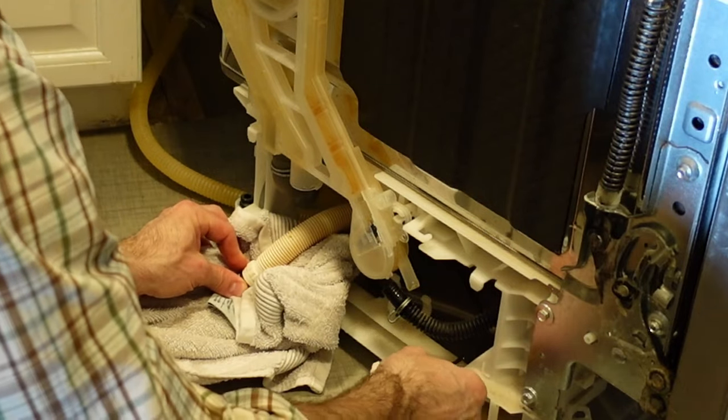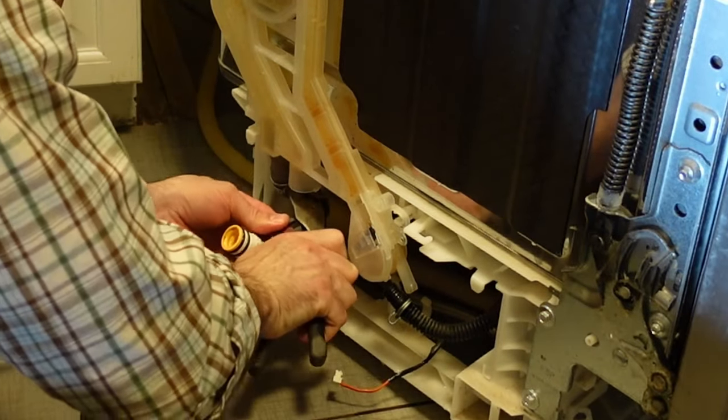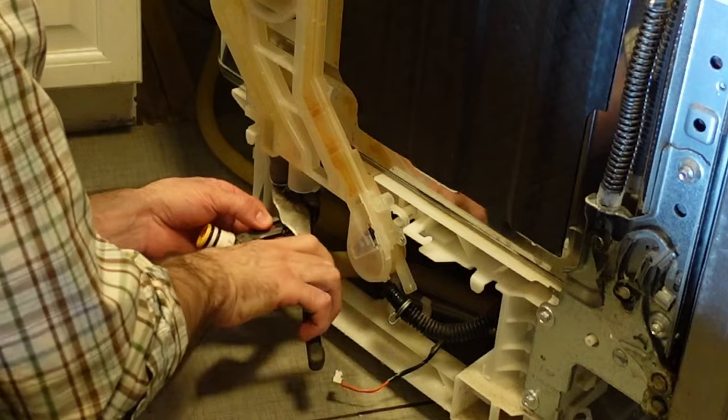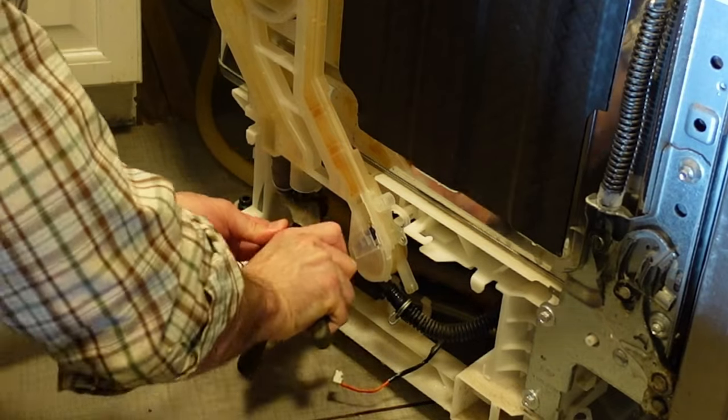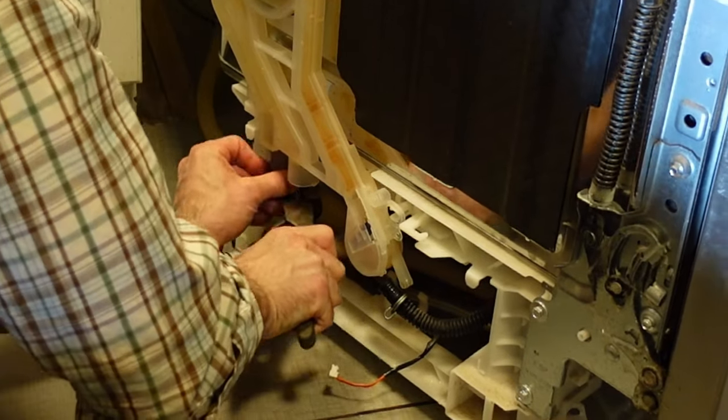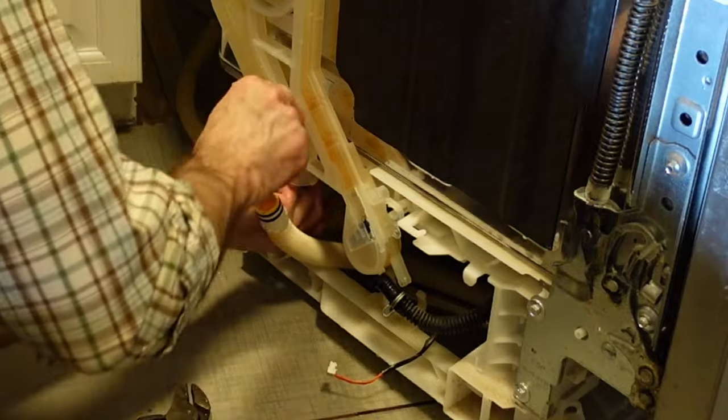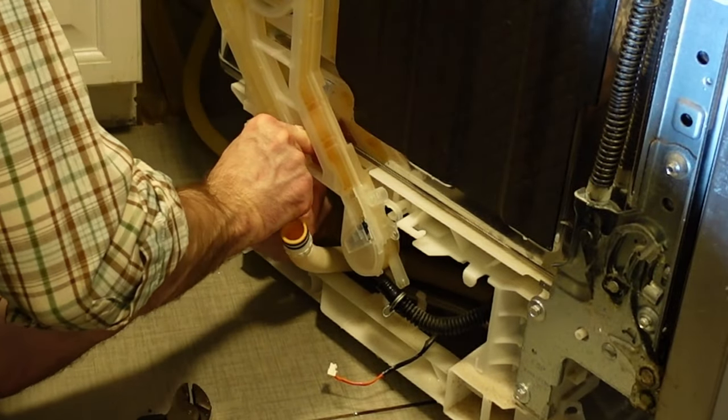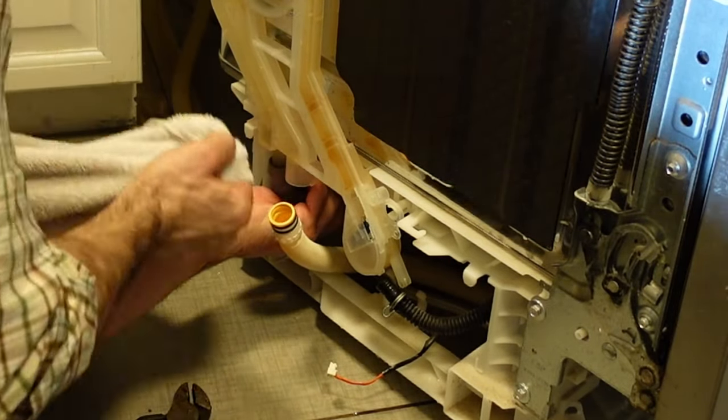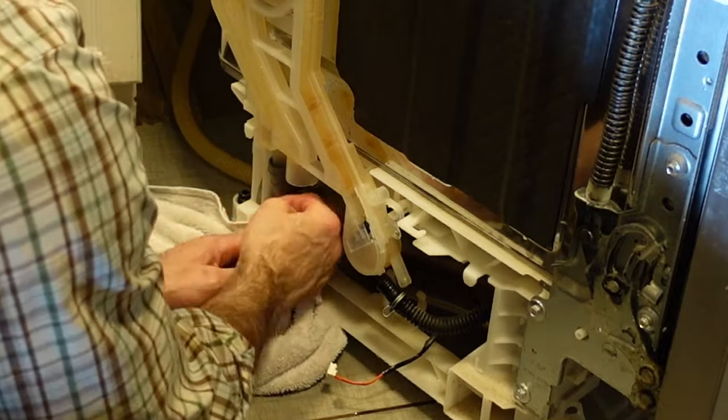And then again with the channel locks or pliers to remove the final discharge hose. So I'm not sure why the dishwasher goes in this cycle on the discharge line, sort of going back into the machine and then up this little loop and then back out the discharge, but it does.